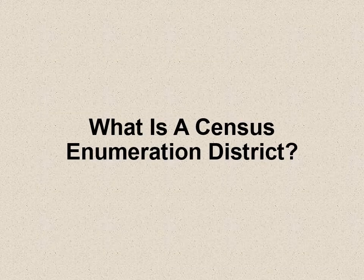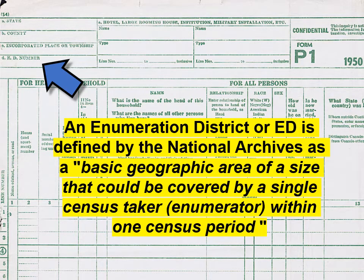So what is a census enumeration district? Here is a part of the 1950 census population schedule. You'll see at the upper left there is a space for the ED number. An enumeration district, or ED, is defined by the National Archives as a basic geographic area of a size that could be covered by a single census taker — a person called an enumerator — within one census period. In the 1950 U.S. Census, enumerators in cities were given two weeks to complete their tasks; those in rural areas, a month.